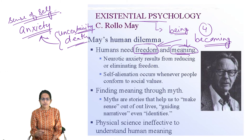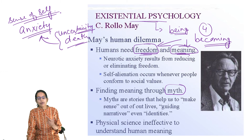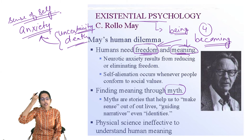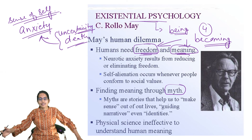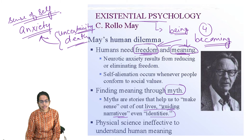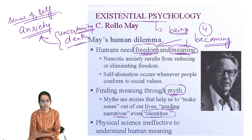May said that when humans need freedom and meaning, this meaning comes through myth. Myths are stories that make sense out of our lives — stories passed down from parents, grandparents, and great-grandparents. These become guiding narratives: how to behave, which practices to follow or not follow. These guiding narratives also establish themselves as identities.